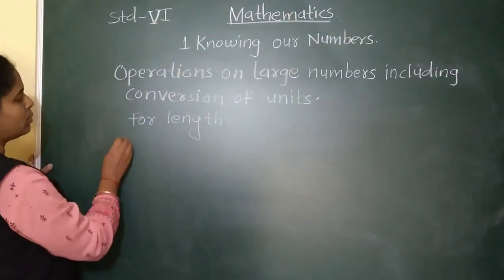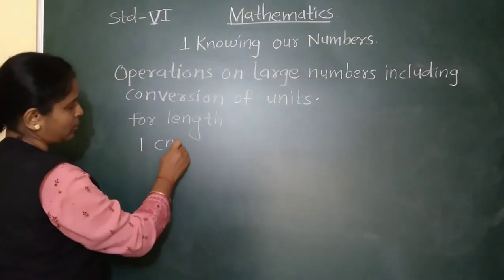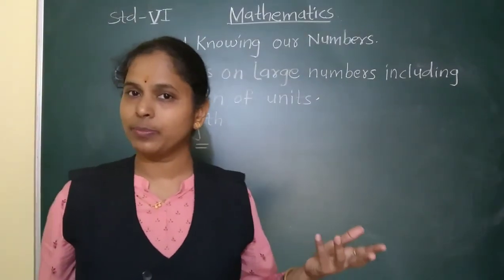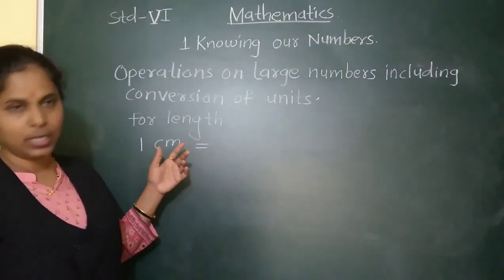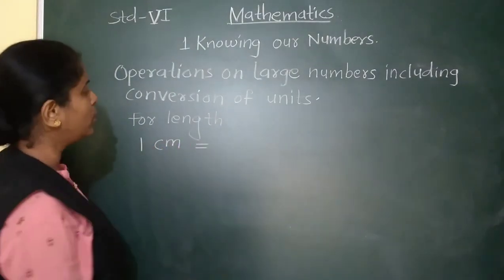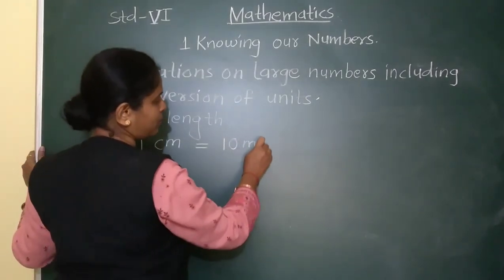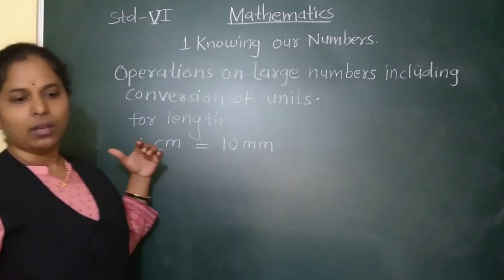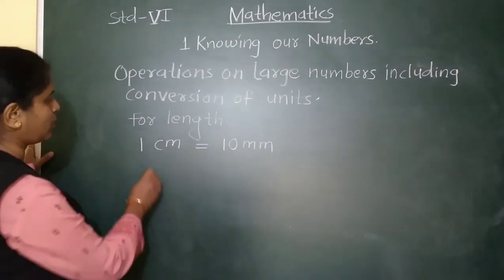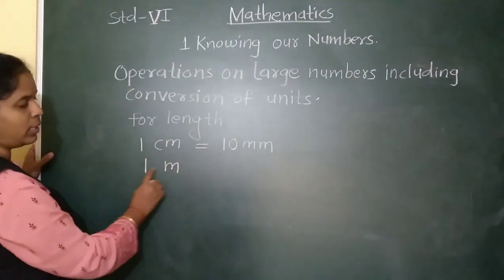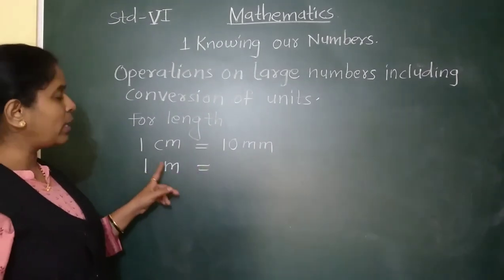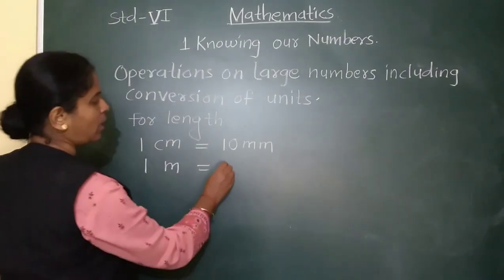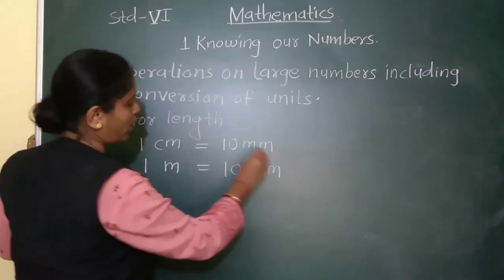First, one centimetre — CM is the abbreviation for centimetre — is equal to 10 millimetres. MM means millimetres. Next, one metre — M for metre — is equal to how many centimetres? 100 centimetres make 1 metre.